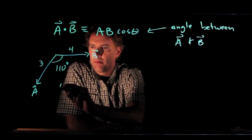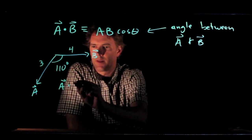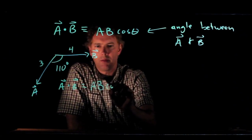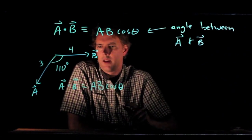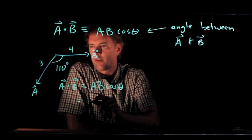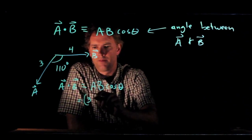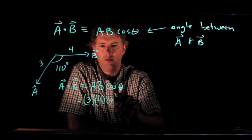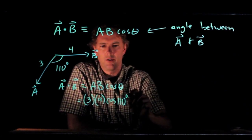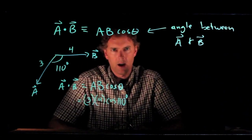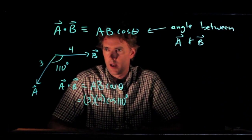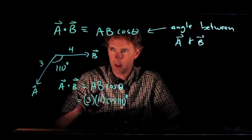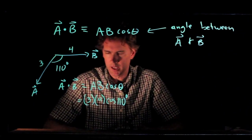So, A dot B is going to be what? Well, it's magnitude of A times magnitude of B times the cosine of theta, which in this case is 3 times 4 times the cosine of the angle between them, 110 degrees. Now, 110 degrees, cosine of that angle is a negative number, which makes sense. These things are kind of pointing in opposite directions.